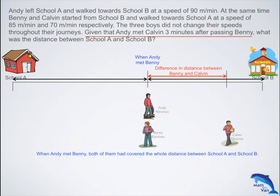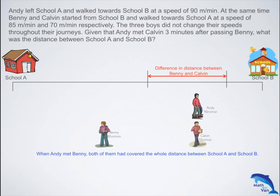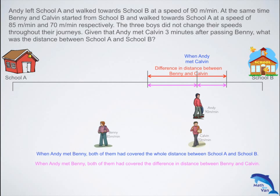We were told that after passing Benny, Andy would have to travel for another three minutes before meeting Calvin. So three minutes later, as you can see, the distance covered by Andy and the distance covered by Calvin — their combined distance is actually equal to the difference in distance between Benny and Calvin at the earlier moment when Andy met Benny. We take 90 times 3 plus 70 times 3, and in total the distance is 480 meters.